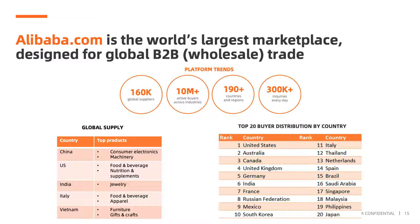We are truly global in supply. Certain regions specialize in particular categories — China is very strong in consumer electronics and machinery, the U.S. is strong in food and beverage, Italy also in food and beverage and apparel, and Vietnam is really taking over the furniture category. On the demand side, here are the top 20 countries by buyer distribution — the number one country is the United States, with over 30% of our buyers coming from there.